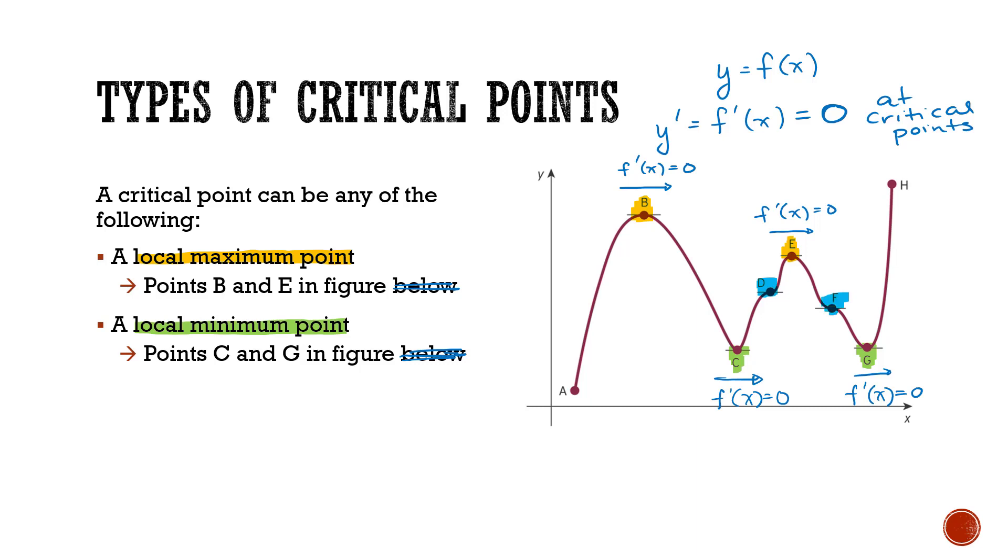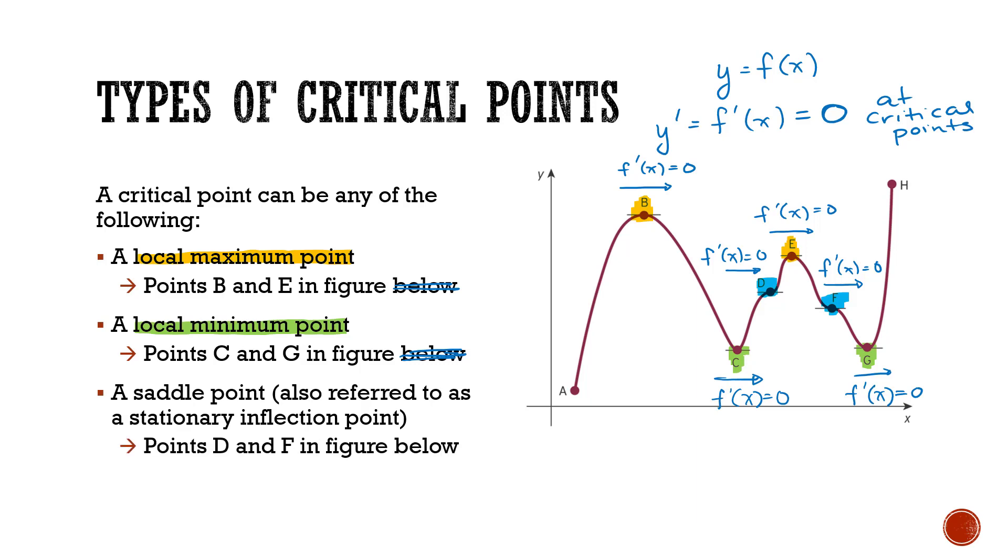Now these points, the slope is equal to zero, but these are neither maximums nor minimums, are they? These sort of points are referred to as saddle points or as stationary inflection points.